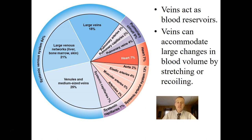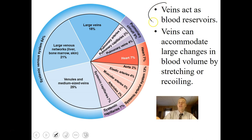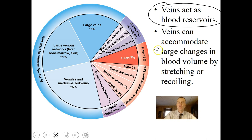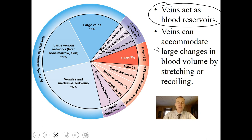At any given time there is more blood in veins than in all other blood vessels, so veins act as blood reservoirs — a place where you can store large volumes of blood. Veins can accommodate large changes in blood volume by stretching or recoiling. The smooth muscle tissue in veins can also be contracted to tighten them up and send more blood back to systemic circulation.